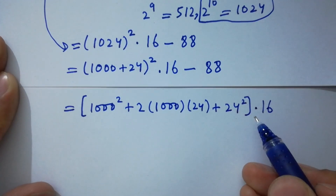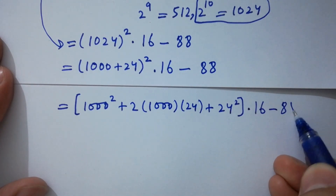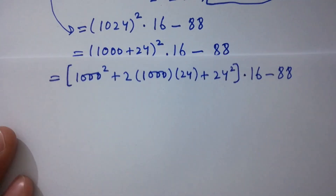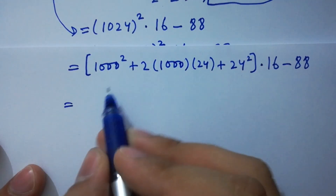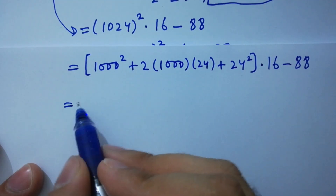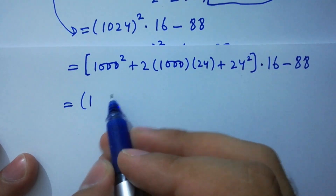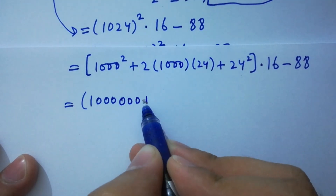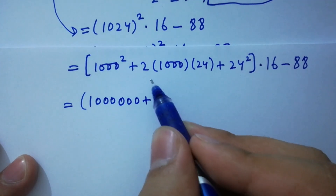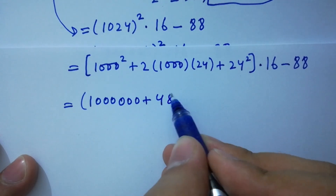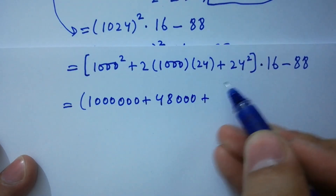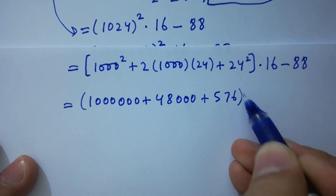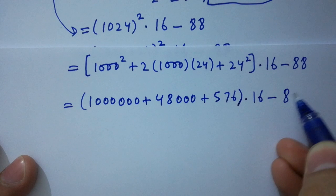That gives us 1,000,000 plus 48,000 plus 576, times 16, minus 88. Adding these up: 1,000,000 plus 48,000 plus 576 equals 1,048,576. Times 16, minus 88.